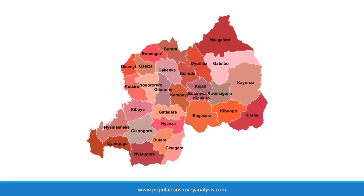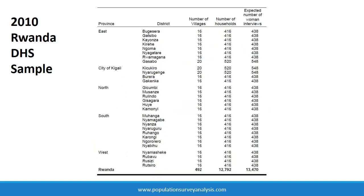Stratification can bias national mean estimates when populations are different in each subnational region, and these subnational regions have different population sizes. Why? It has to do with the fact that approximately the same number of households are sampled from each stratum, but the strata have different population sizes.